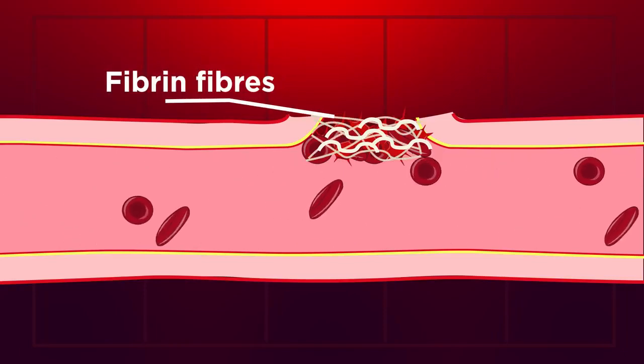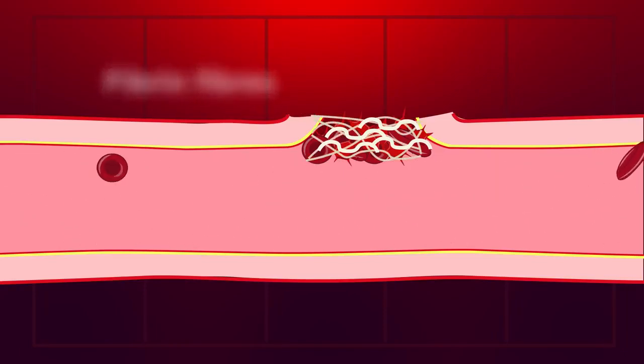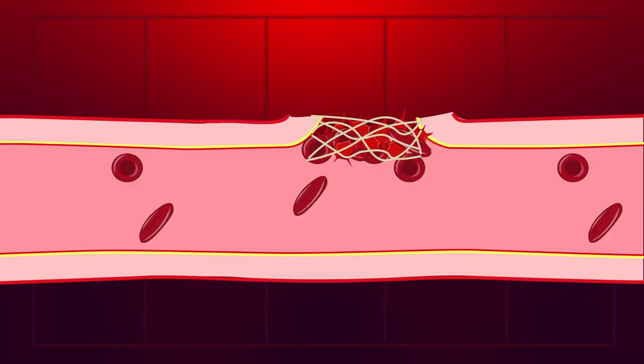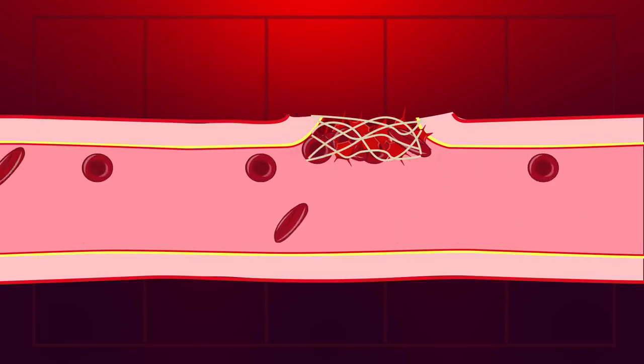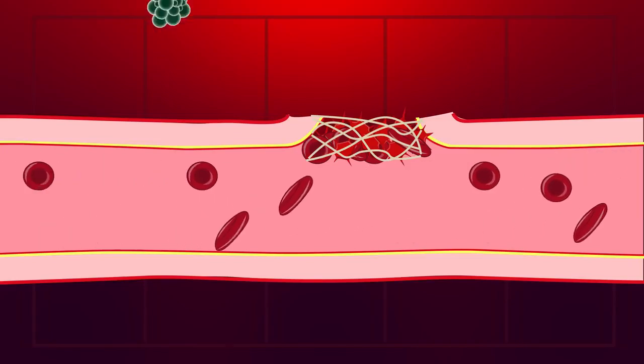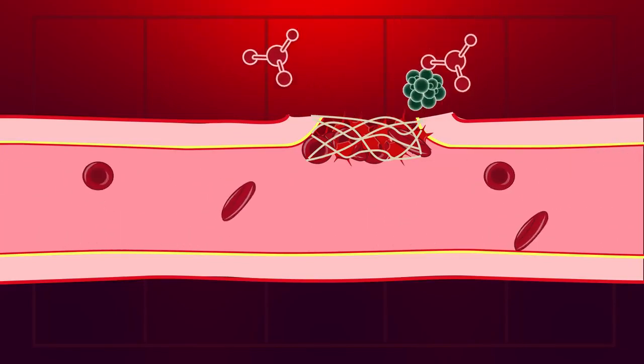The fibrin fibers form a mesh, holding all the platelets together and making a much stronger clot. More platelets, red blood cells and other components in our blood all get stuck to the mesh, making it even stronger. This clot stops more blood escaping the body, and also prevents nasty pathogens entering our body from the outside.